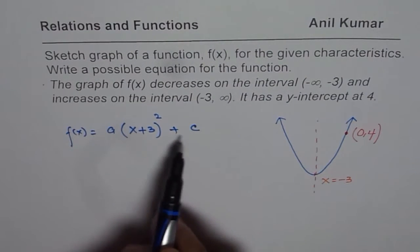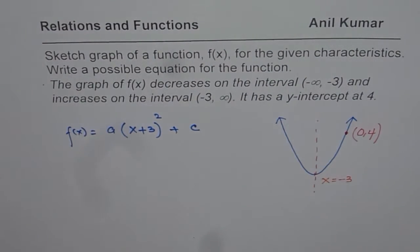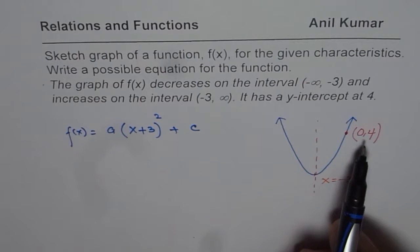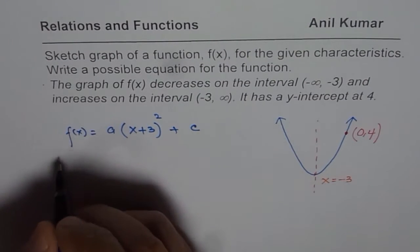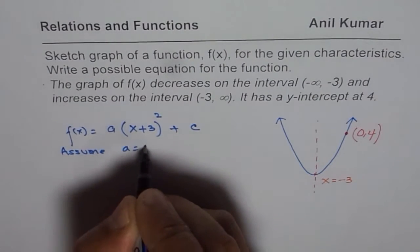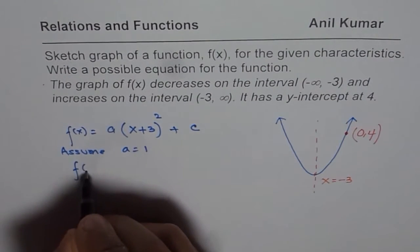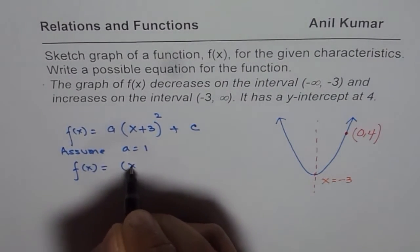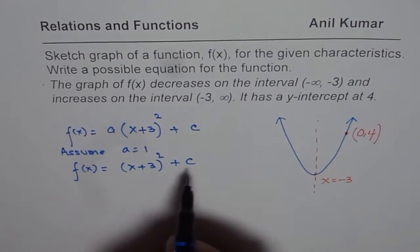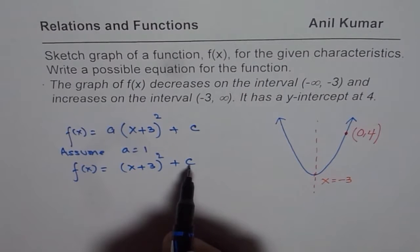To find a and c we can use the given point. Now there are two variables and just one more point to deal with. So what we will do is we will assume a equals 1. In that case we get our equation as f(x) = (x+3)² + c. Now for a equals 1 we can find what c is.